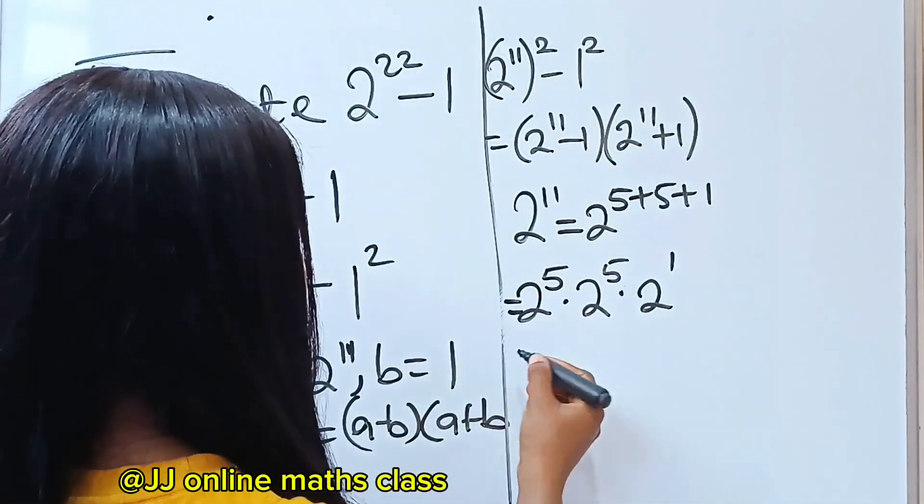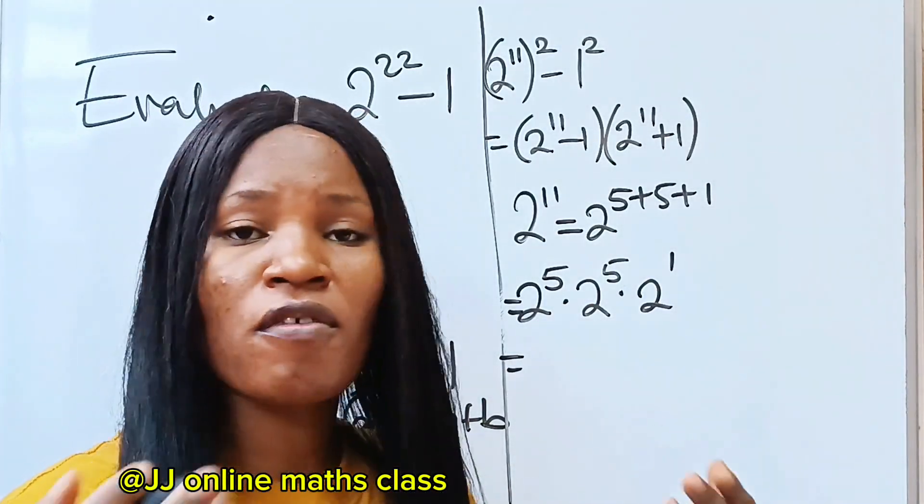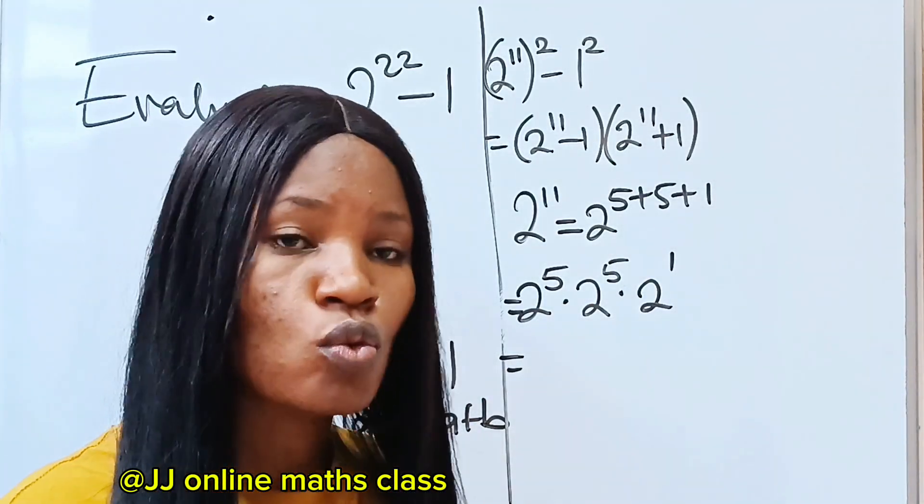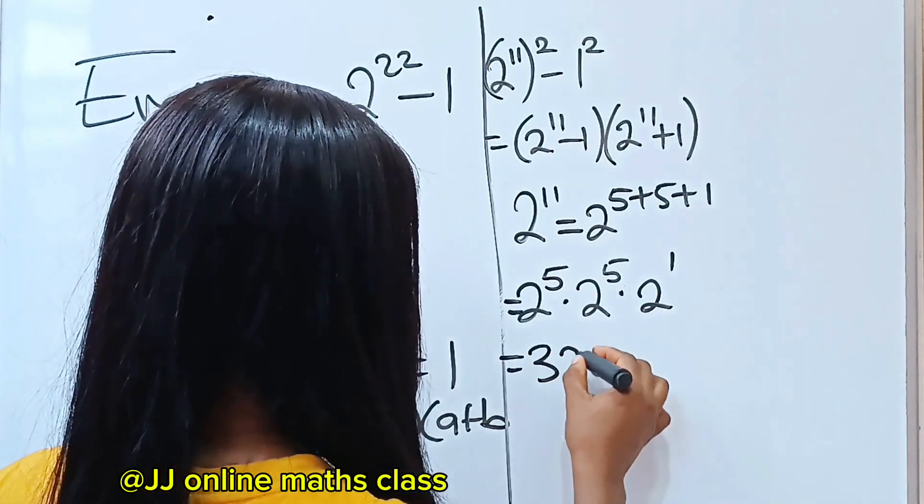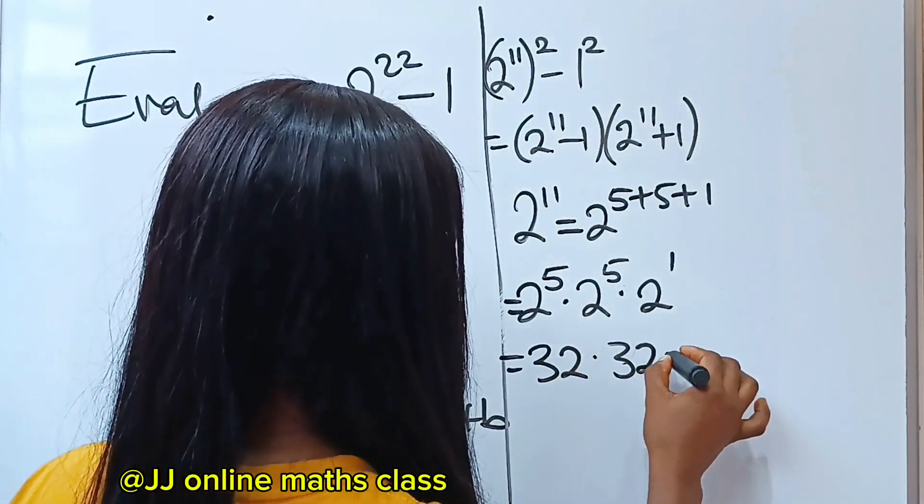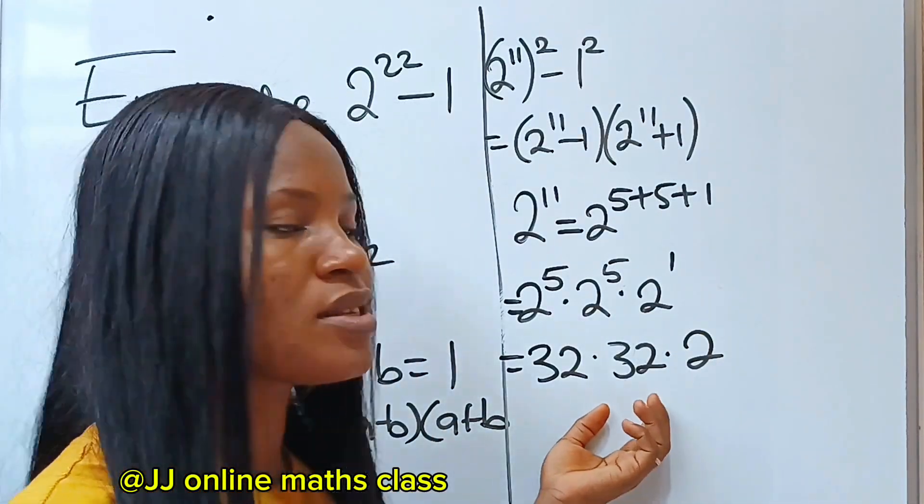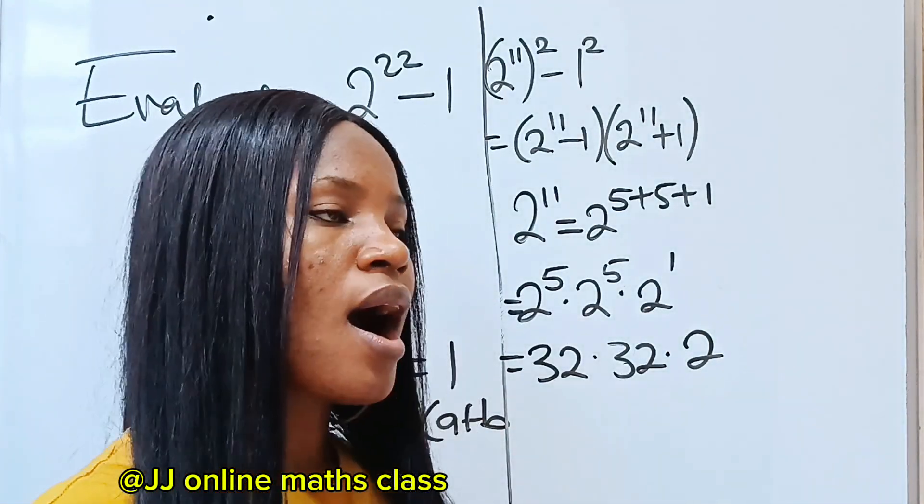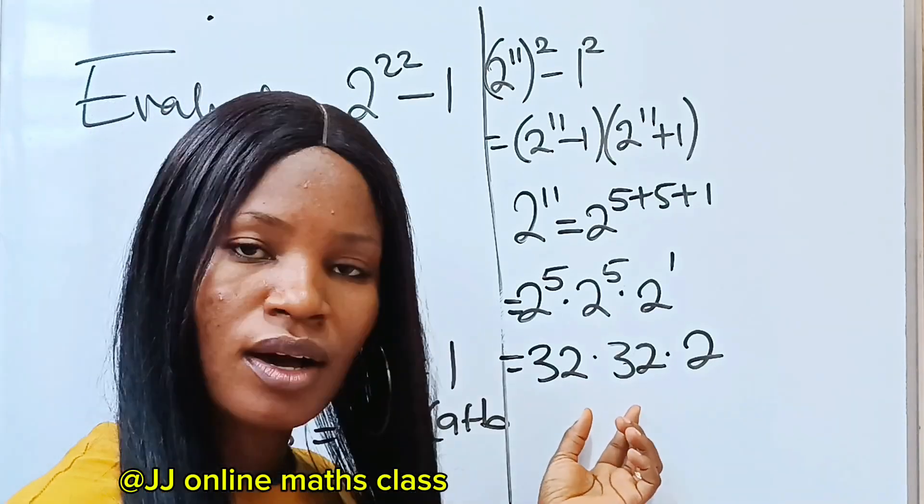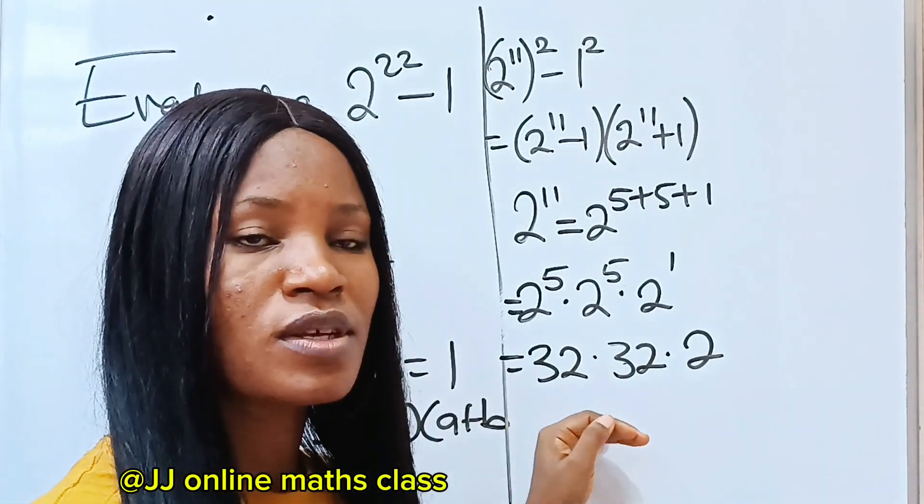2 to the power of 5 is so very easy. 2 to the power of 5 is 32. This means 32 multiplied by 32 multiplied by 2. Now, 32 multiplied by 32 means 32 squared. I'm going to give you a trick that is going to make this very fast. And those tricks are, if you go to my playlist, you're going to see max tricks.